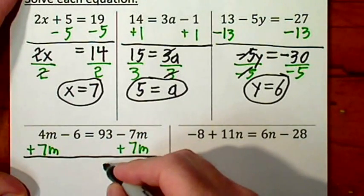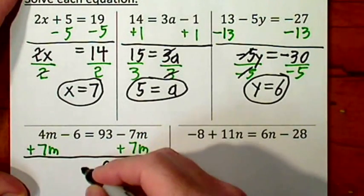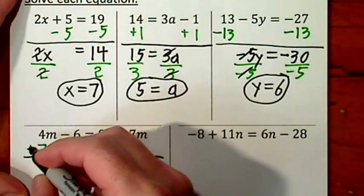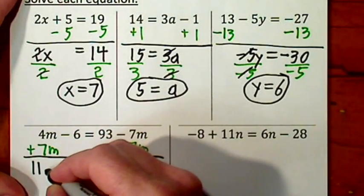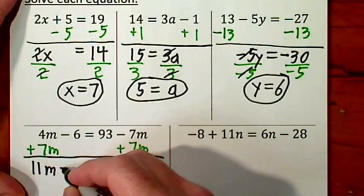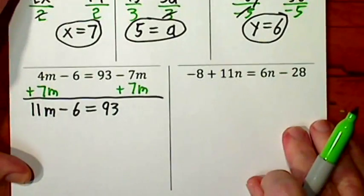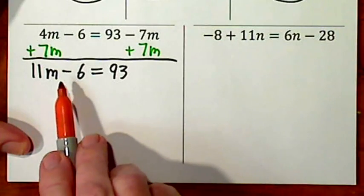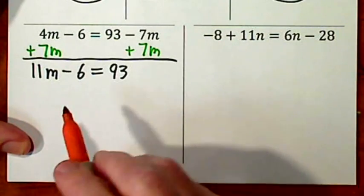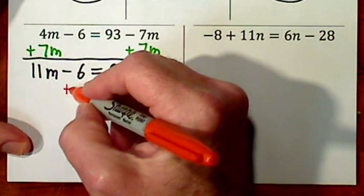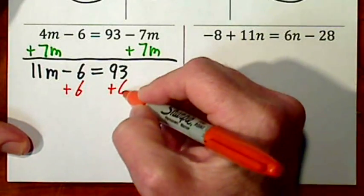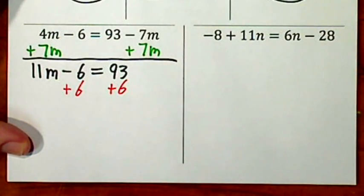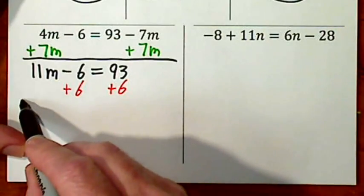Come to the other side of the equal, and since I have a like term, I put it underneath that. That's a 0. I don't have to write it. This is 11m. Bring down the negative 6. Now I want to get rid of the negative 6. So I'll put a positive 6 underneath. Come to the other side of the equal sign. Put a positive 6.